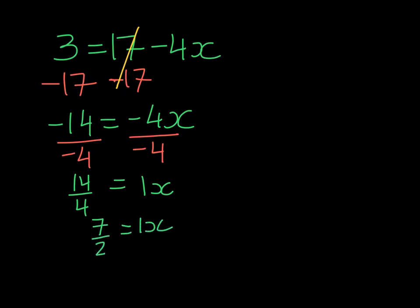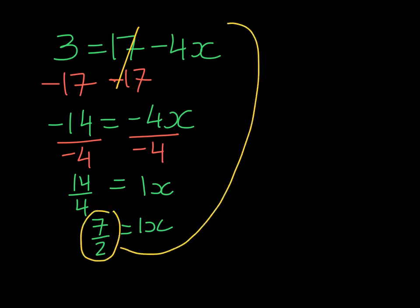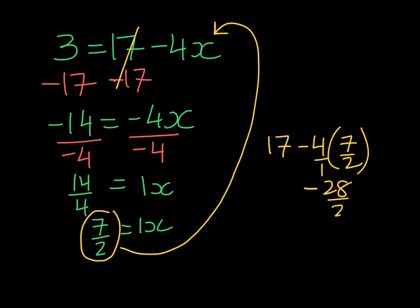At this point we can take our solution, substitute it into the original equation, and check. We can simplify 14 fourths by dividing top and bottom by 2, which leaves us with 7 halves. Checking: 17 take away 4 times 7 halves — in the numerator I get negative 28 over 2, which gives me negative 14. So 17 take away 14 — does that give me 3? Yes it does. So we've solved it correctly.